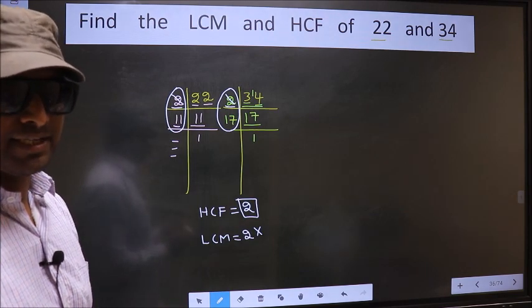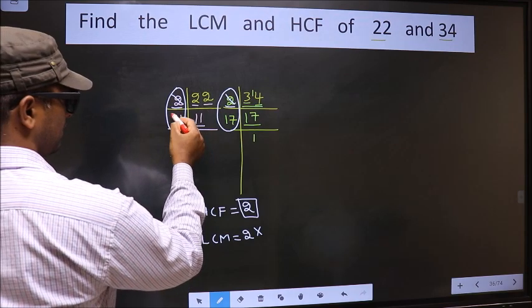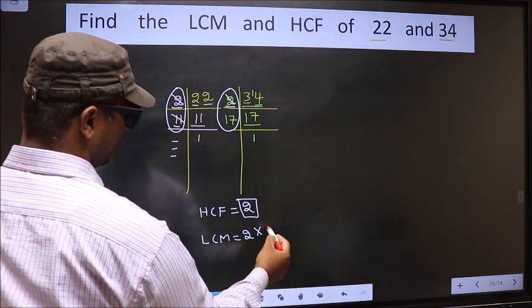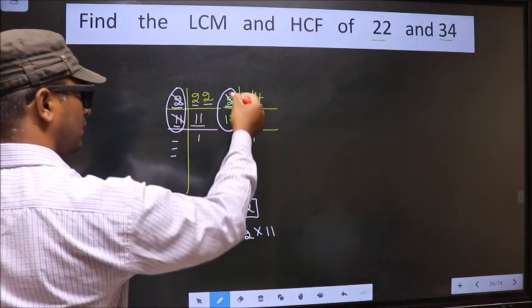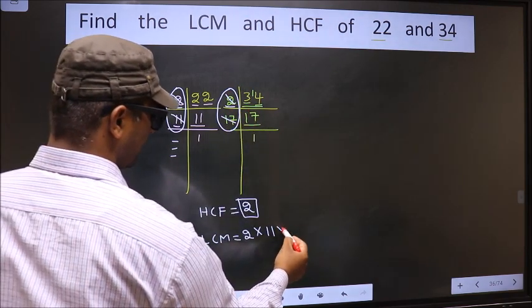What I mean is, over here we did not cut 11, so now you cut 11 and write here. Over here 17 is not cut, so now you cut 17 and write here.